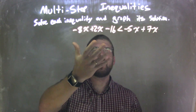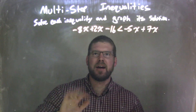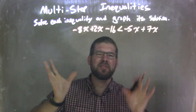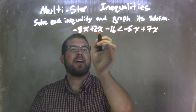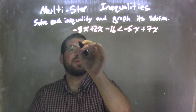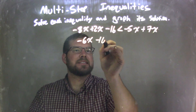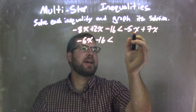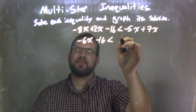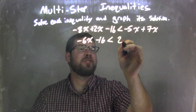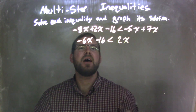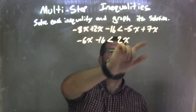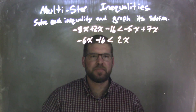Now we're going to combine our like terms on each side. I see there are x's on both sides, so I'm just going to combine them. Negative 8x plus 2x is negative 6x, minus 16, is less than negative 5x plus 2x. So now in one quick step by combining them, I also have a much easier problem.